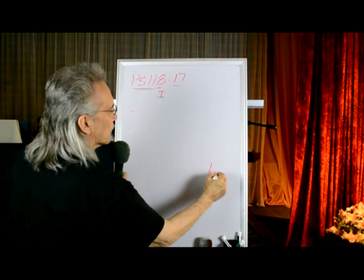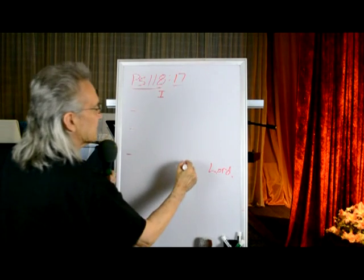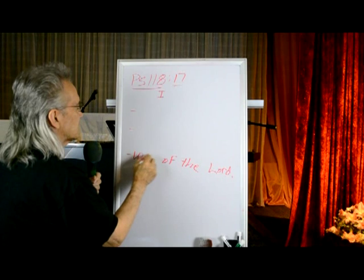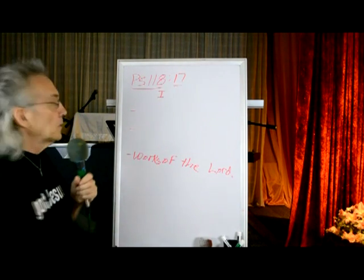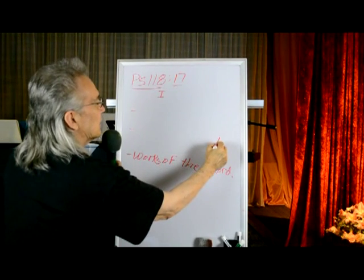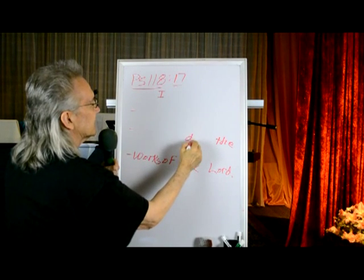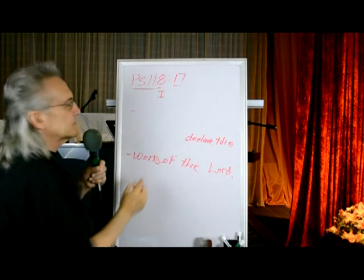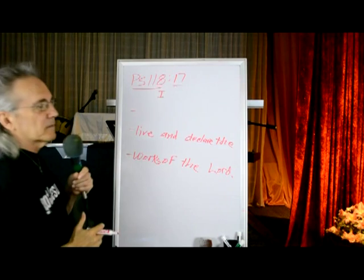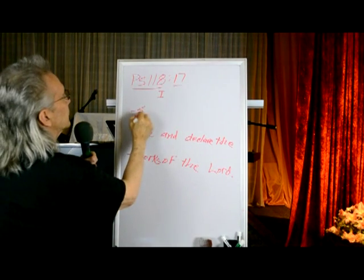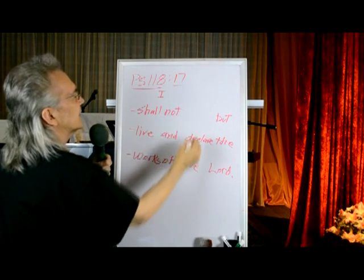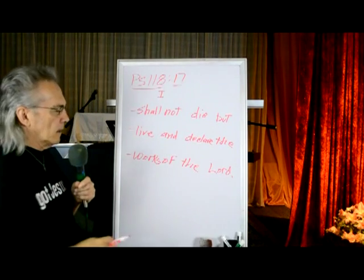So what do we have here? I put 'Lord' there — that's the last word. Next to that is 'Thee.' Next to 'Thee' is 'Of.' Next to 'Of' is 'Works.' Starting from the last part of the next line: 'Thee,' then 'Declare,' then 'And,' then 'Live.' That leaves us with: 'Shall,' 'Not,' 'But,' 'Die.' So the full verse working backwards wasn't so bad, was it?